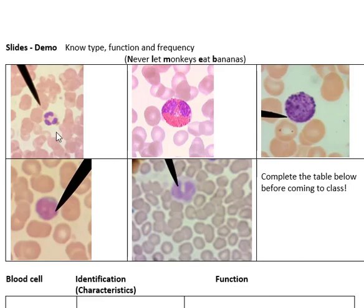This one is a polymorphonuclear leukocyte, or PMN for short, also called a neutrophil. You can tell this one because it has a multi-lobed nucleus. Polymorpho means many-shape, nuclear refers to the nucleus, and leukocyte means a white blood cell.